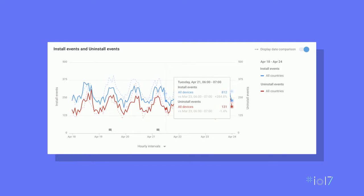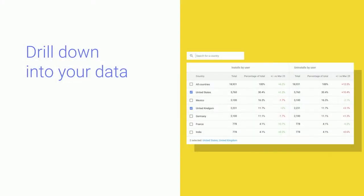The comparison features are still available also when you look at the data at an hourly granularity. Last but not least, the previous stats page used to show you the top 10 results for certain breakdowns, such as countries and device. If you wanted to dig deeper into data, you had to download the CSV export.